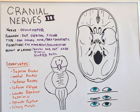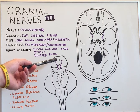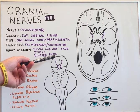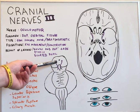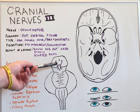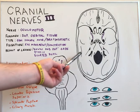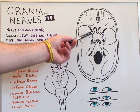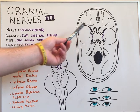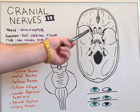The ocular motor nerve originates from the anterior aspect of the midbrain. It exits through the medial side of the cerebellar peduncles, or the interpeduncular fossa, and continues its course anteriorly, where it goes through the cavernous sinus, and then exits through the superior orbital fissure.